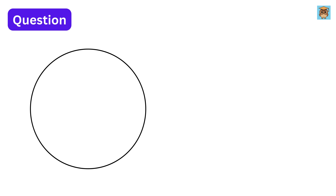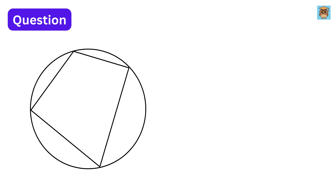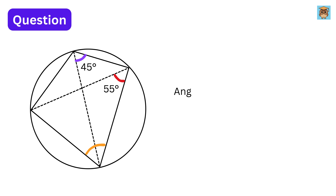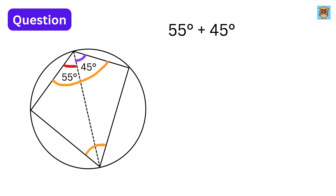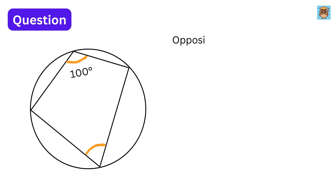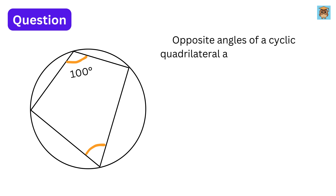Let us end this video with this question. Suppose this is a cyclic quadrilateral in which these are its diagonals. If this angle is 55 degrees and this angle is 45 degrees, then what will be the value of this angle? Using our first theorem, we know that the angles subtended by the same arc are equal. So if this angle is 55 degrees, then this angle will also be equal to 55 degrees. So this angle will be equal to 55 plus 45, or 100 degrees. Then, since the opposite angles of a cyclic quadrilateral are supplementary and add to 180 degrees, if this is 100, then this will be 80 degrees.